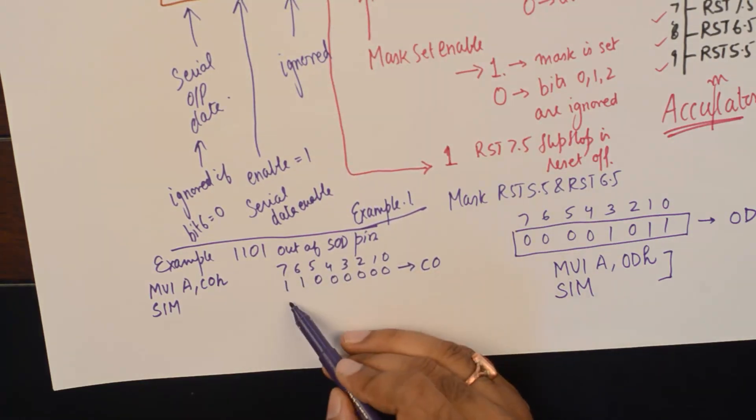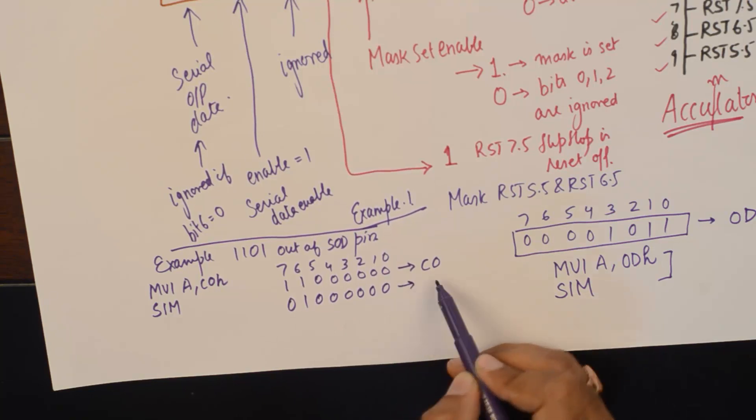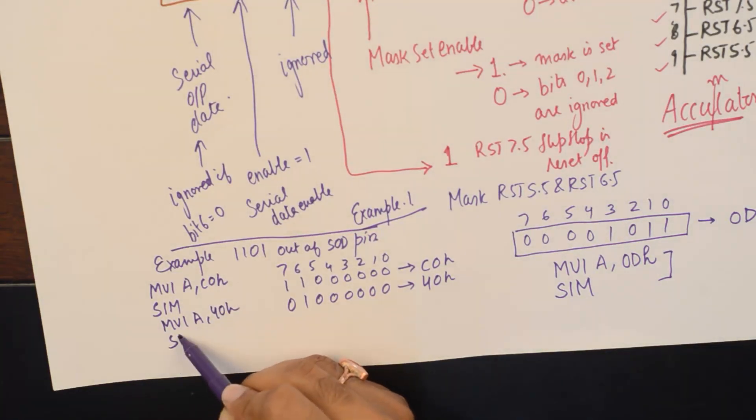Now, I want to send 0. I will make it 0 here and this should be 1. So this code becomes 40H. So I will do MVI A, 40H and then SIM.